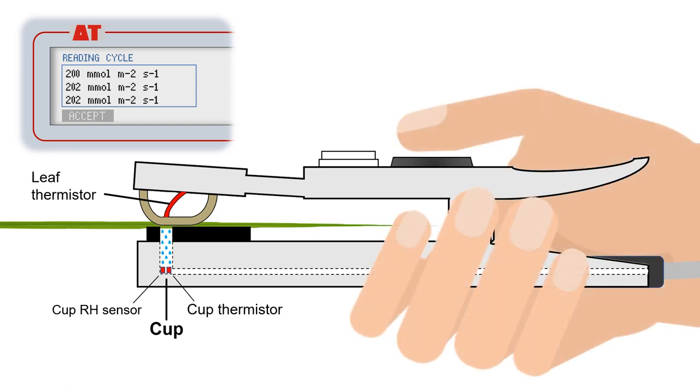Signified by a double beep, the user can then accept the reading by pressing the button on top of the sensor head.